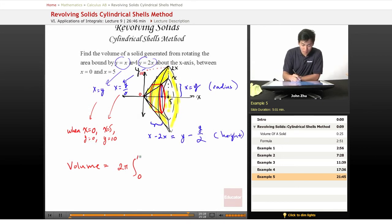OK, so 0 to 10. So always remember to flip your x and y's if you're going to integrate in terms of the different variable, the other variable. So we have 2 pi times our radius, which is y, times our height, which is y minus y over 2 dy.